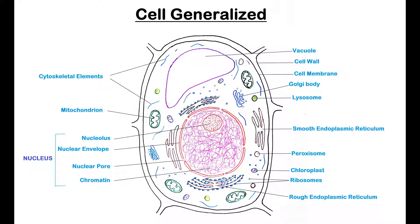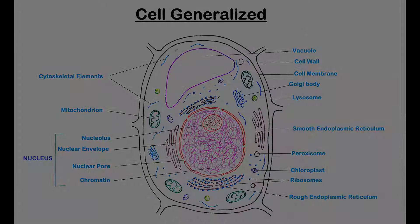A eukaryotic plant cell differs from a eukaryotic animal cell in the presence of a definite cell wall primarily made of cellulose in plant cells. A prokaryotic cell differs from a eukaryotic cell mainly in the absence of a definite membrane-bound nucleus or membrane-bound organelles in prokaryotic cells.